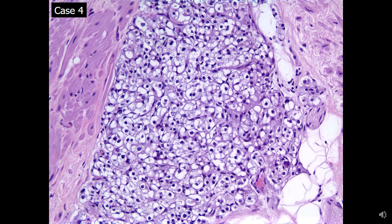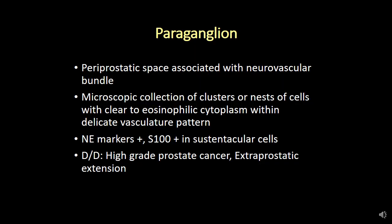The diagnosis for this case is paraganglion. They are typically seen in the periprostatic space associated with neurovascular bundles, so they are more laterally seen in radical prostatectomy specimens. The hallmark feature is a microscopic collection of clusters or nests of cells with clear to eosinophilic cytoplasm within a delicate vascular pattern. This is typically an incidental finding, and the microscopic size is important to distinguish it from a full-blown paraganglioma. In case of doubt, PSA will be negative and neuroendocrine markers are positive. S100 will be positive in a sustentacular cell pattern.